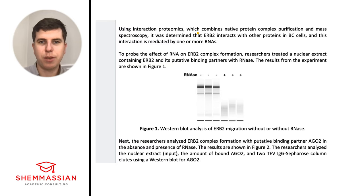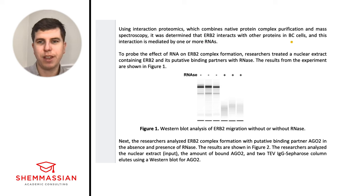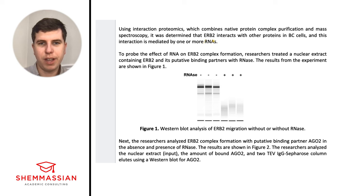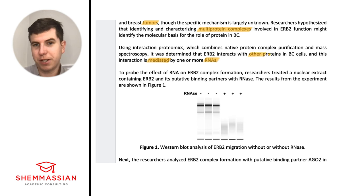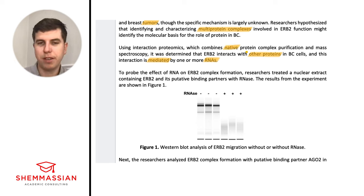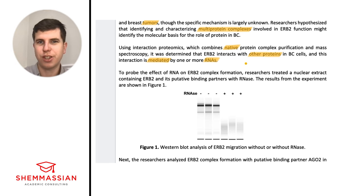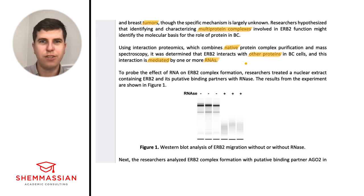Using interaction proteomics — which combines native protein complex purification and mass spectroscopy — it was determined that ERB2 interacts with other proteins in breast cancer cells, and this interaction is mediated by one or more RNAs. We should also know that 'native' refers to the original folded conformation — that quaternary structure — so we're looking at proteins without breaking them down.